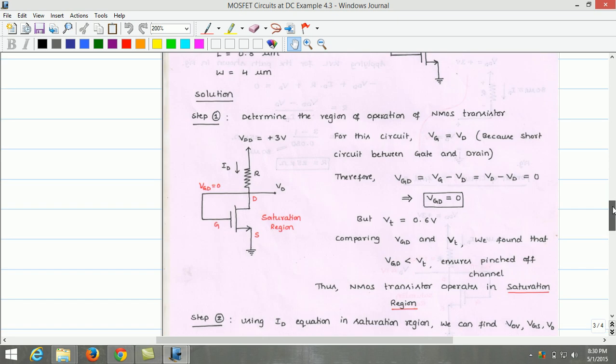In step 1, we will determine the region of operation of n-MOSFET transistor. For the circuit, Vg equals Vd because there is a short circuit between the gate and drain. Therefore, the Vgd equation is Vgd equals Vg minus Vd. Substituting Vg as Vd, we get Vd minus Vd which equals 0 volt. This implies Vgd equals 0.